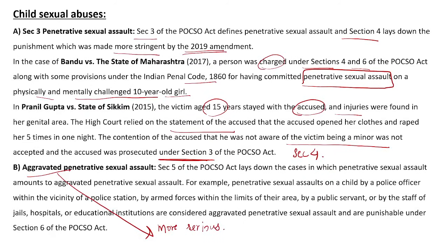Section 5 defines aggravated penetrative sexual assault, and Section 6 provides its punishments. If a penetrative sexual assault is committed by a police officer in a police station, by armed forces within their area, by a public servant, or by staff of a jail, hospital, or educational institute, then it will be treated as aggravated penetrative sexual assault and punishment will be given as per Section 6. These punishments for Sections 4 and 6 have been covered separately in a table format.